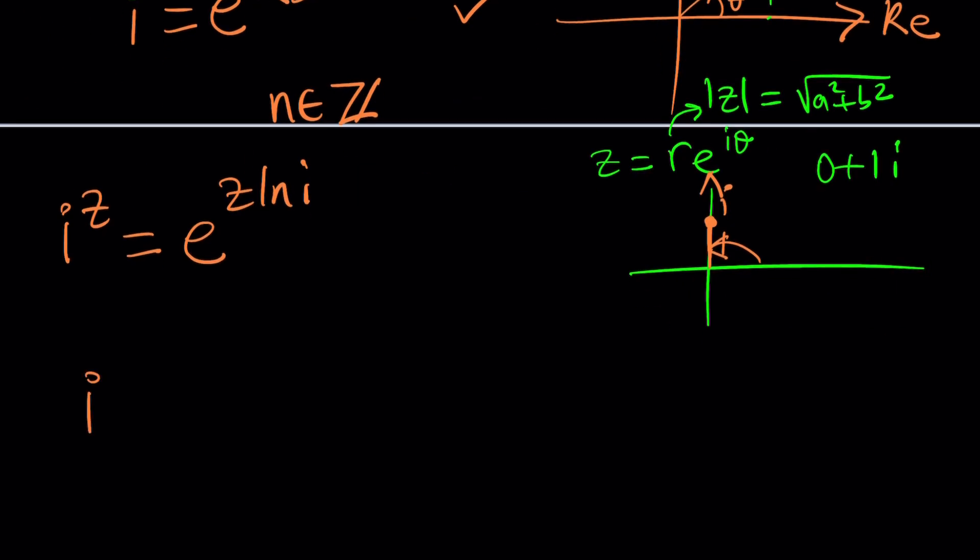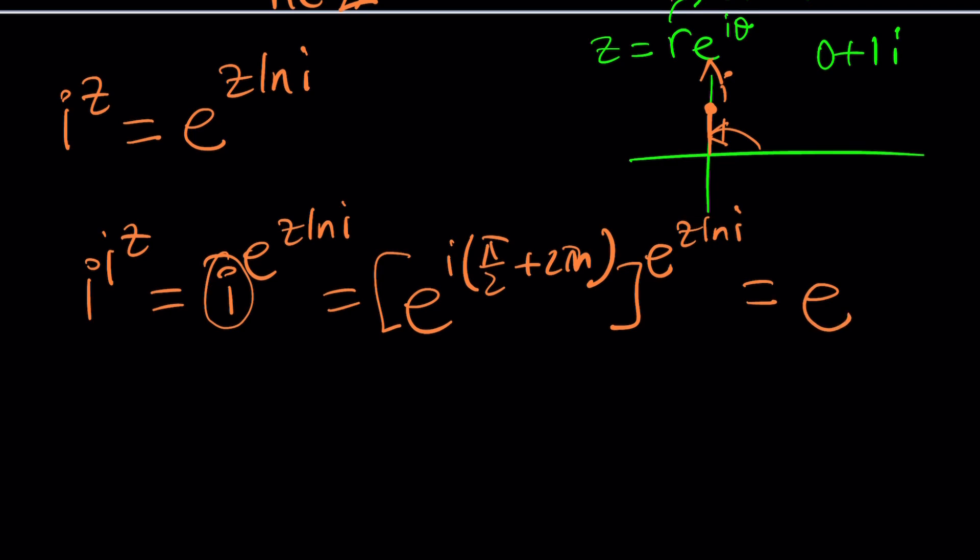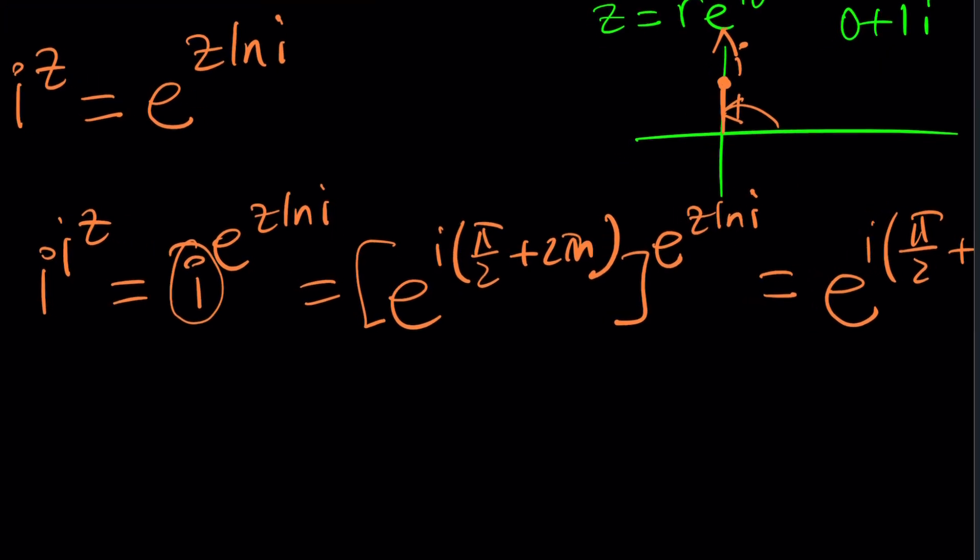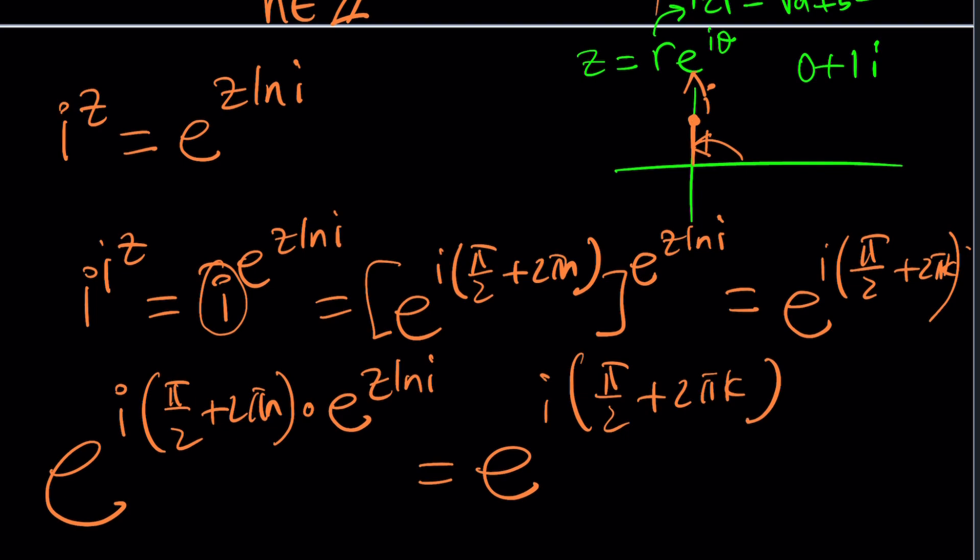We're going to replace i to the power i to the Z with e to the power Z ln i. But then i can also be replaced with e to the power i times π/2 plus 2πN. We'll raise that to the power e to the power Z ln i, and that's equal to i, which is e to the power i times π/2 plus 2πK. That N doesn't have to be the same integer, so we could use K. Now let's put it all together.